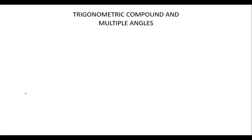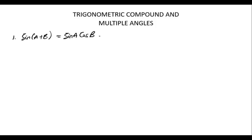So we will be looking at trigonometric compound and multiple angles. Let's have a look at some examples. The first one is sin(A + B). The compound angles are A and B — they are angles. So if we have sin(A + B), the expansion is: sin A cos B plus cos A sin B.